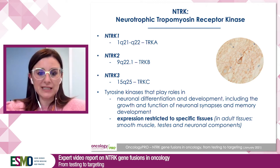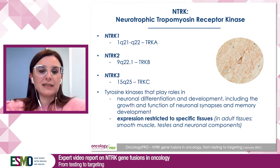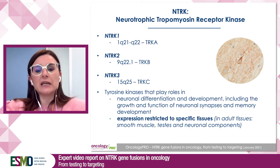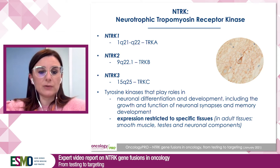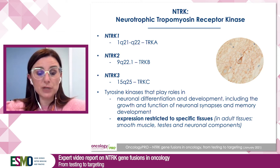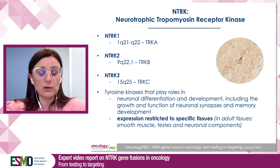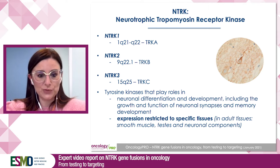The NTRK genes constitute a family of tyrosine kinases. We have three members: NTRK1, 2, and 3. These three genes map to different chromosome locations. Physiologically, the NTRK genes play a role in neuronal differentiation, and the expression of the wild-type protein is restricted to specific tissues, mainly neuronal components and other tissues.